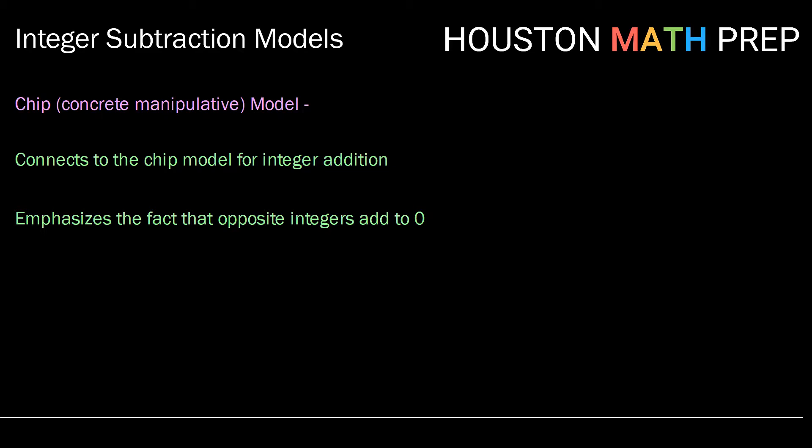It again emphasizes the fact that opposite integers add to zero through the pairing of one positive with one negative chip. And it reinforces the idea from whole number addition that adding zero does not change a sum.